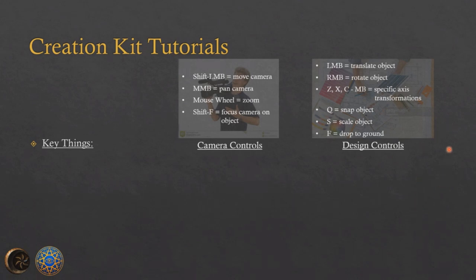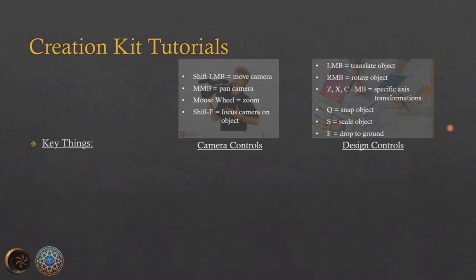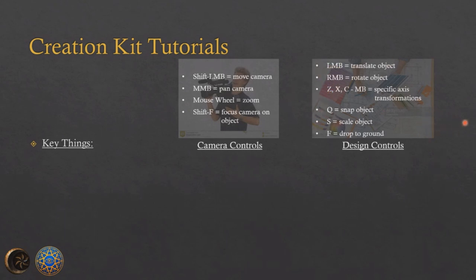F is a very useful key — it drops the selected object to the ground. The yellow 3D plus you see is the object's origin point, and pressing F drops it to the nearest collision point. For example, if you place a plate in a cave and press F, it snacks to the cave floor. This is really useful for cluttering, like putting things on bookshelves. Some assets like pitchers have their origin in the middle, so they may intersect with a table — in that case, hold Z to move it straight up and adjust.